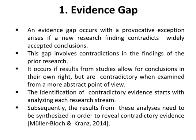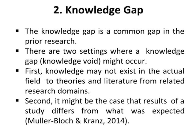Mueller, Blotch and Kranz, 2014. Number two is knowledge gap. The knowledge gap is a common gap in prior research. There are two settings where a knowledge gap, or knowledge void, might occur. First, knowledge may not exist in the actual field due to theories and literature from related research domains. Second, it might be the case that results of a study differ from what was expected.